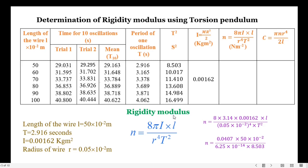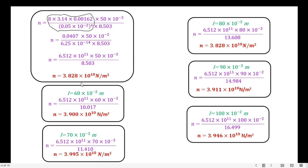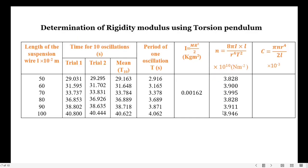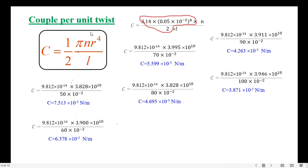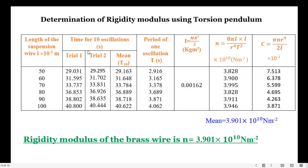Now let us move on to the calculation of rigidity modulus. This is the formula for rigidity modulus — substitute all known values. The rigidity modulus value is calculated for each length from 50 cm to 100 cm, and all n values are entered in the table. Also, the couple per unit twist is calculated. As per our calculation, the rigidity modulus of the brass wire n equals 3.901 times 10 to the power 10 Newton per meter squared.